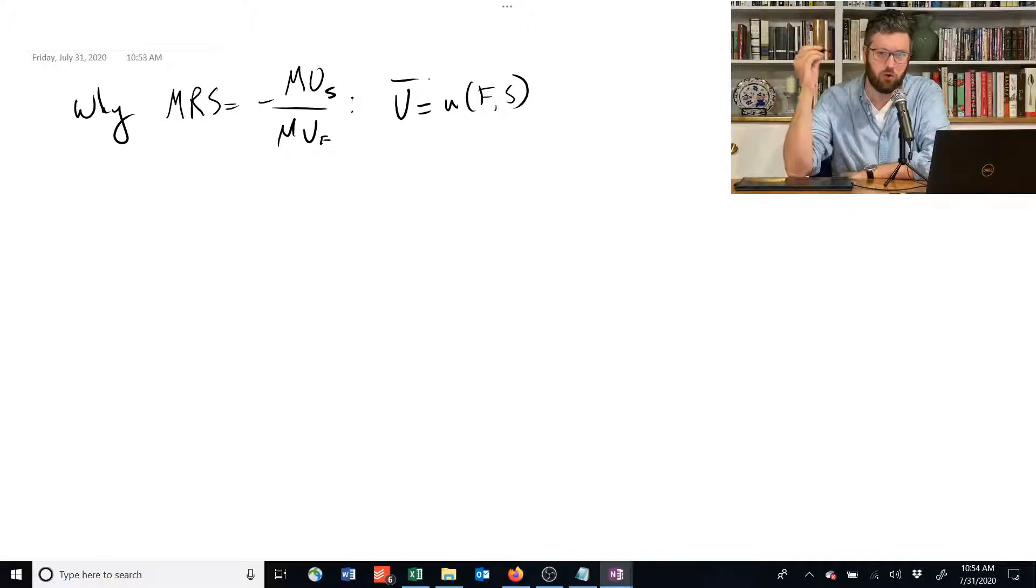We take the total derivative, which means that we take the derivative of all the inputs, multiply them by a small change in output, and we add them together, and that should tell us how much the total, the thing on the left moves.